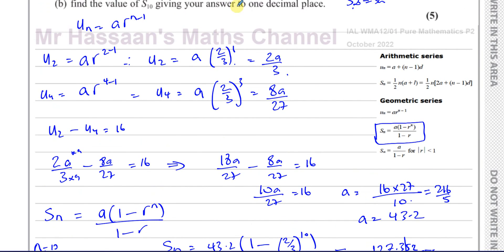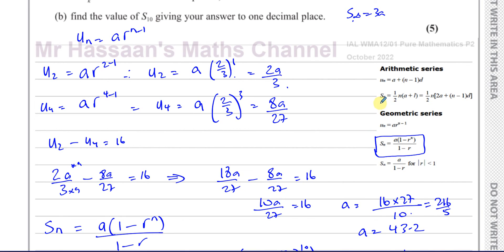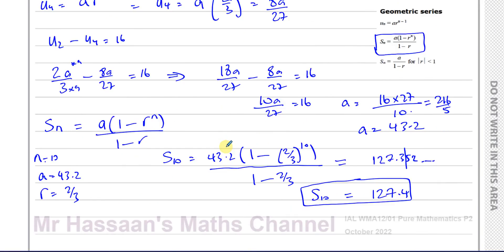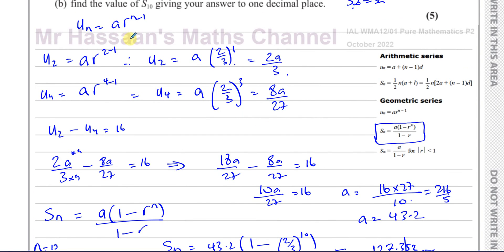Very important for us to understand they're asking for the sum of the first 10 terms. They don't ask us for the 10th term. This is not asking for U10, it's asking for S10. So people mess up in this question by using the wrong formula and not understanding what they're asking for.